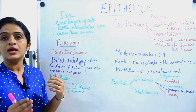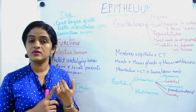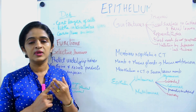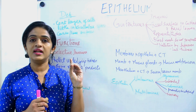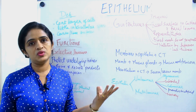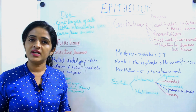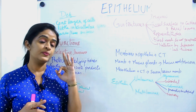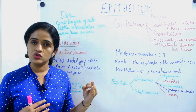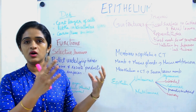Usually when we talk about epithelium, we know that it can be derived from the ectoderm, it can be derived from the endoderm, and it can be derived from the mesoderm. These are the three main germinal layers in embryology from which you get different types of cells and tissues making up your body. Likewise, epithelium can also be derived from all three germ layers — the ectoderm, the endoderm, and the mesoderm — and all three layers will give rise to epithelia of different regions.